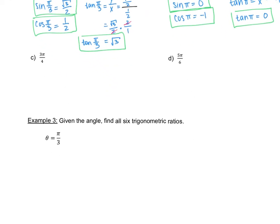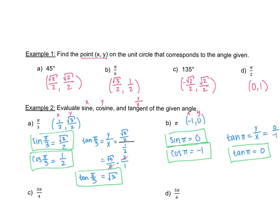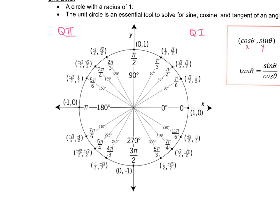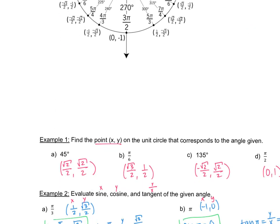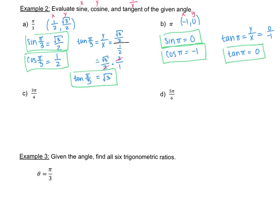For part c, we have 3 pi over 4. On the unit circle, 3 pi over 4 is in the second quadrant at 135 degrees, with coordinates negative square root of 2 over 2 for x and positive square root of 2 over 2 for y. So sine of 3 pi over 4 is square root of 2 over 2, and cosine of 3 pi over 4 is negative square root of 2 over 2.